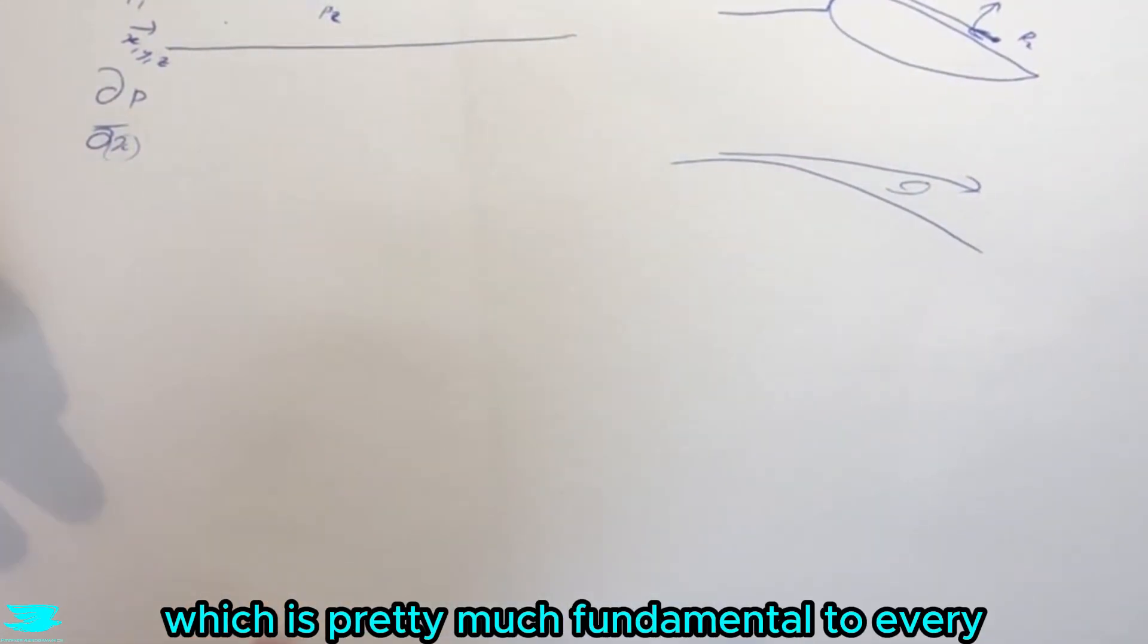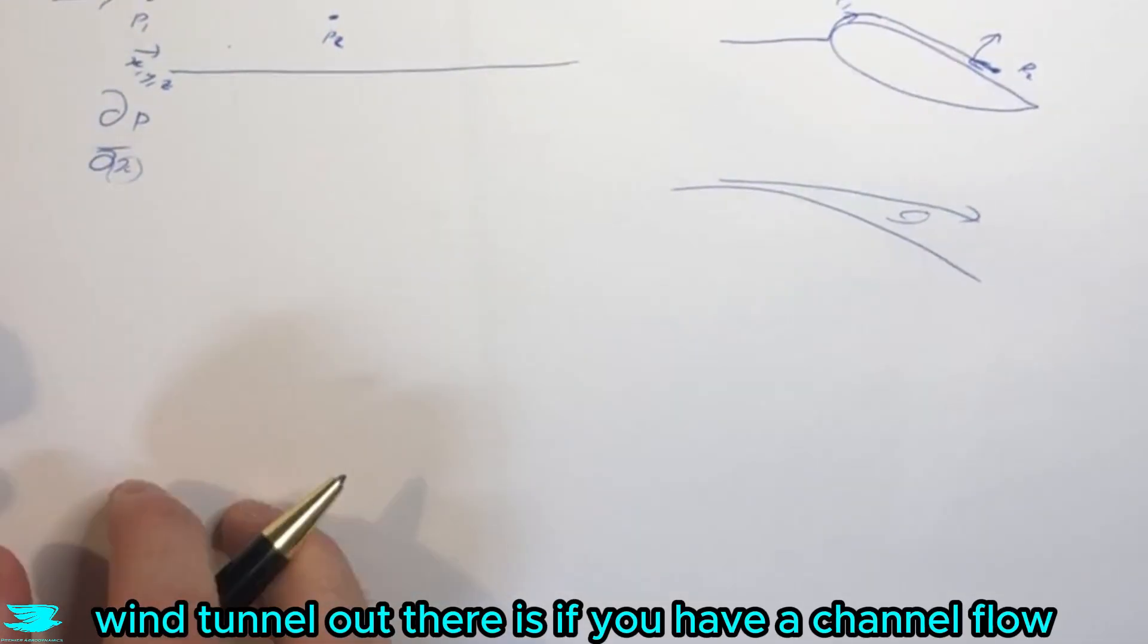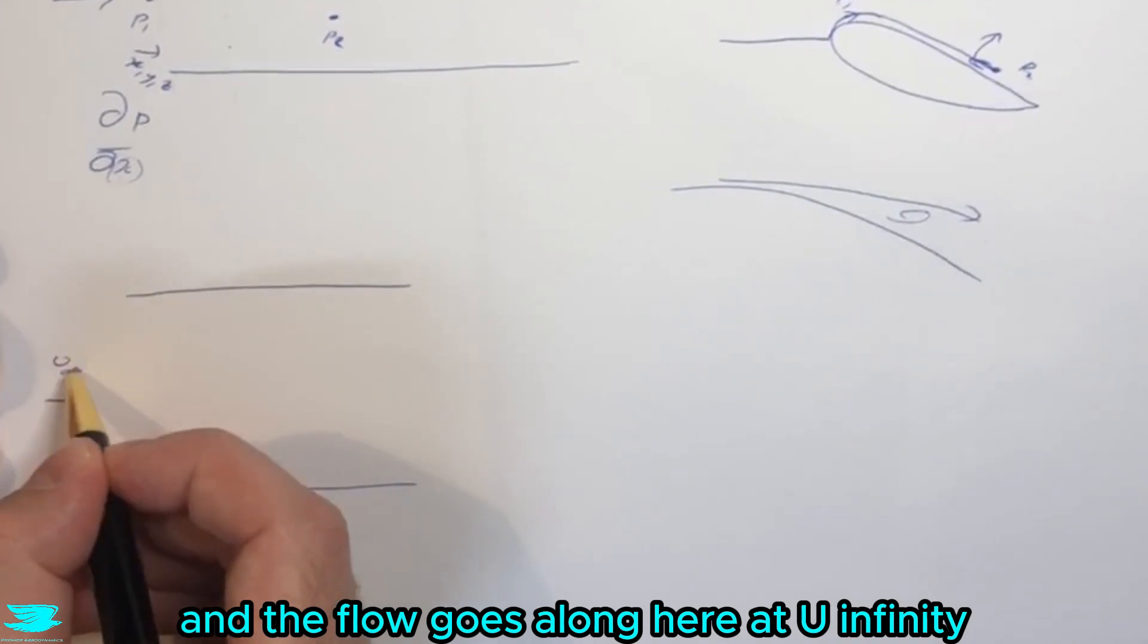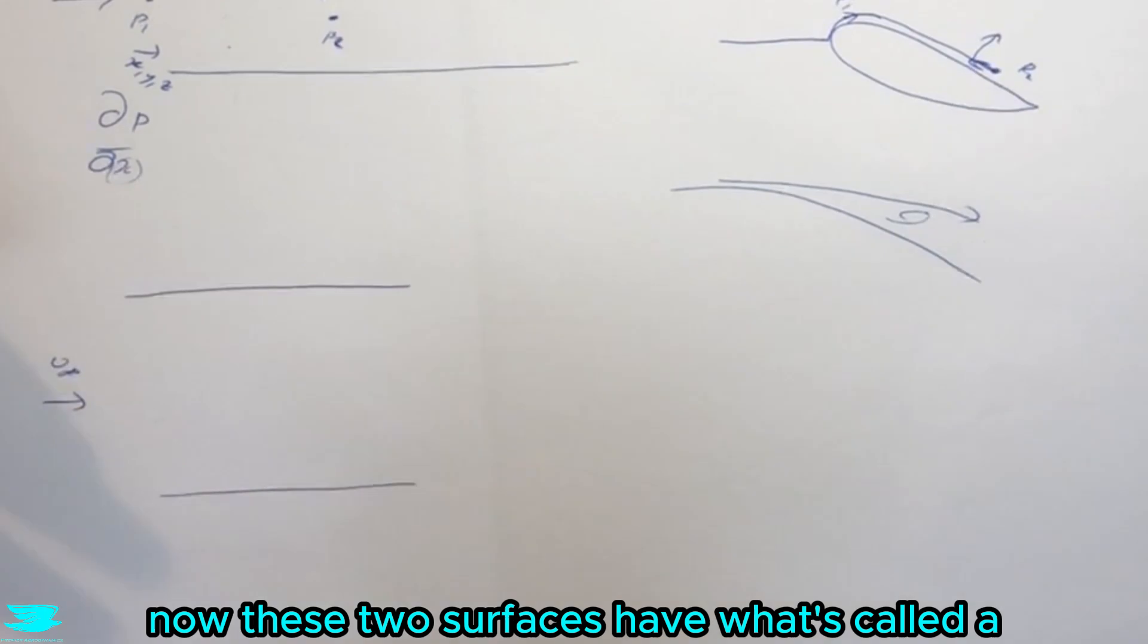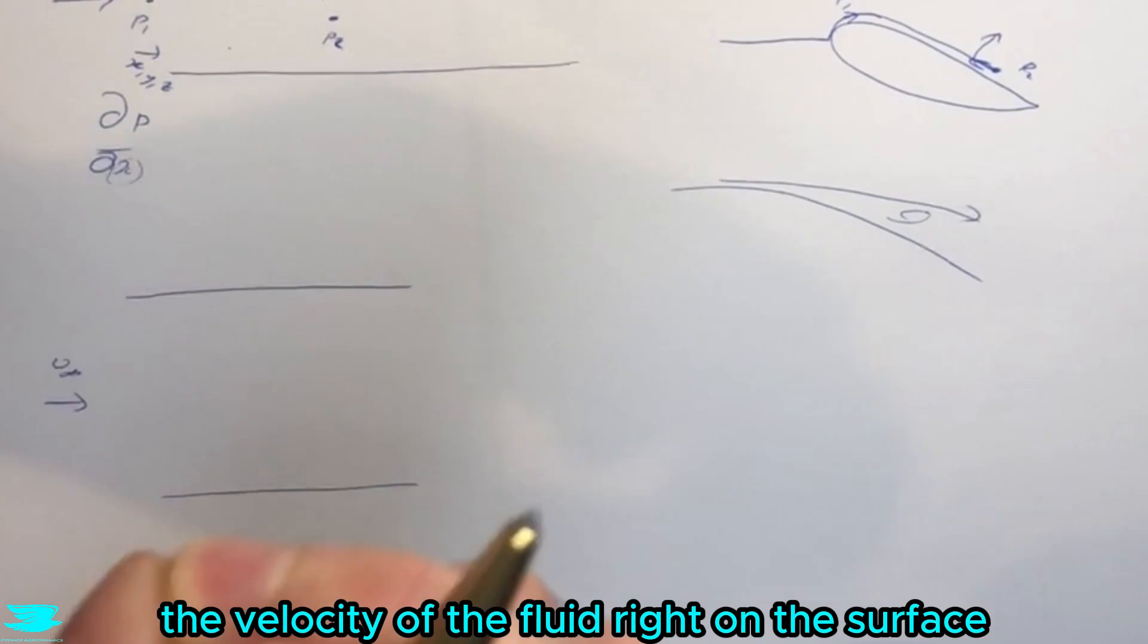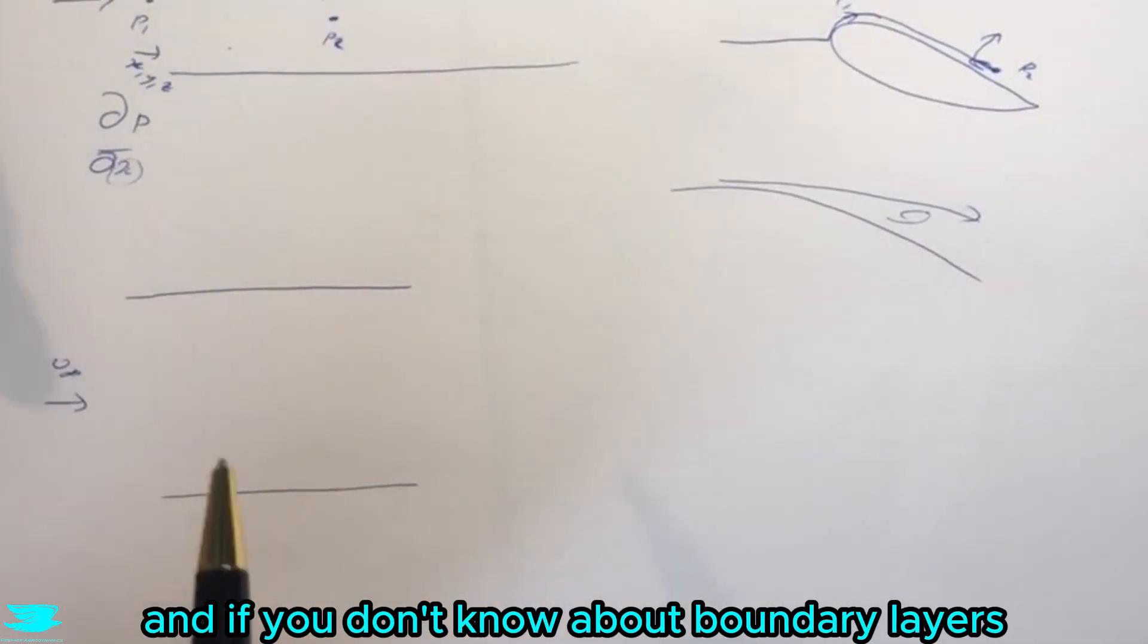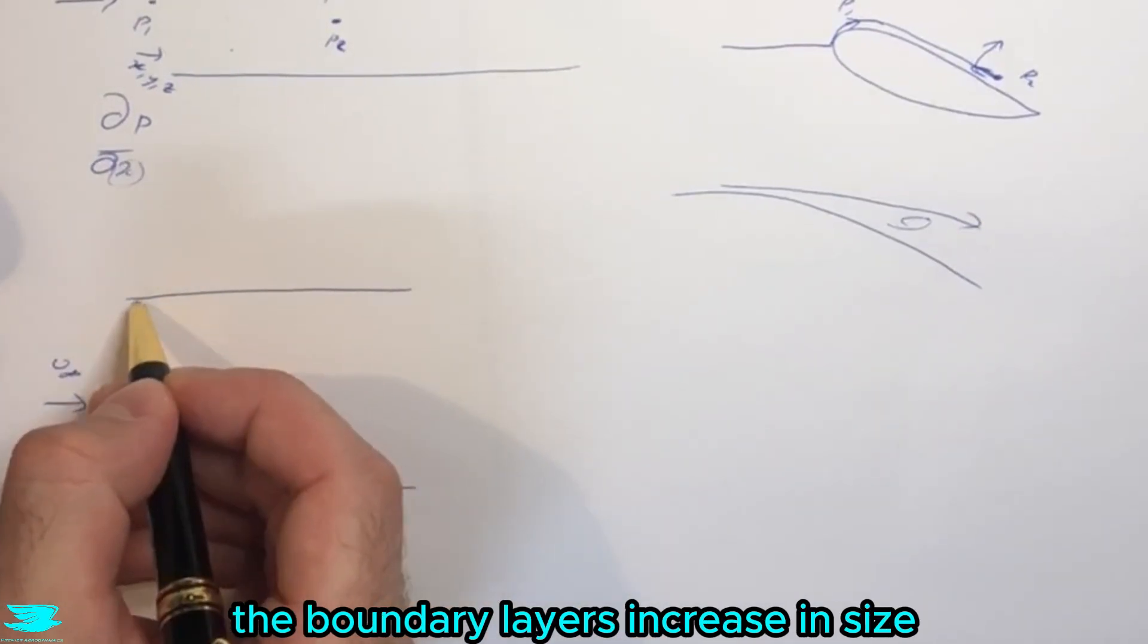Another example which is fundamental to every wind tunnel is channel flow. Let's say we have two surfaces, the top and the bottom, and the flow goes along at u infinity or whatever velocity you like. These two surfaces have what's called a no-slip condition, which means the velocity of the fluid right on the surface will be zero due to friction. As a result we get boundary layers forming. As we go further and further along, the boundary layers increase in size.